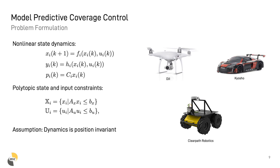In this work, we consider nonlinear state dynamics and polytopic state and input constraints. This modeling choice encompasses different kinds of robots, from aerial drones to ground and underwater robots. The only required assumption is position invariance, namely, the trajectories generated by the dynamic system starting from different positions, but where all the other states are the same, should lead to equal trajectories only shifted in space.